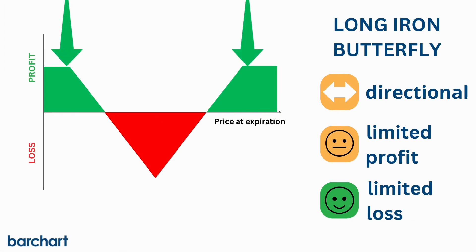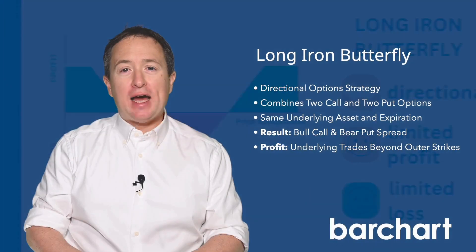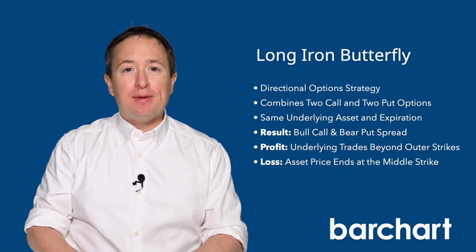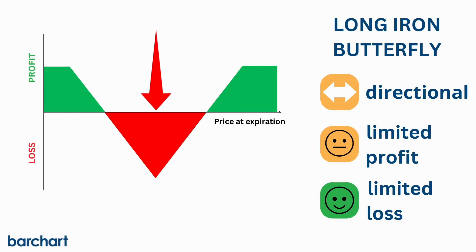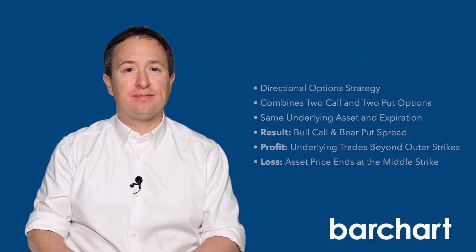The goal of a long iron butterfly is for the underlying asset's price to trade beyond the outer strike prices. If this happens, you'll hit the maximum profit condition. The maximum loss occurs if the asset price settles at exactly the middle strike price at expiration. The long iron butterfly is a complex strategy, and finding the perfect asset to trade on is not going to be easy.